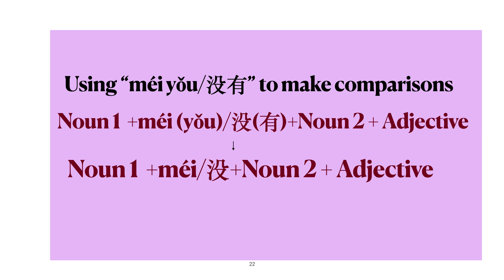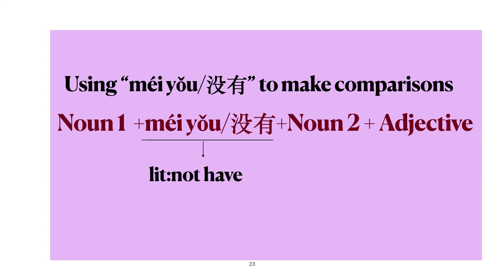没有 literally means 'not have' — you have learned this one before, meaning 'I don't have something' or 'she doesn't have something.' But here, it means 'not as good as' or 'less than something.'